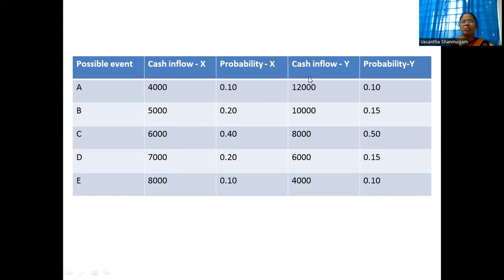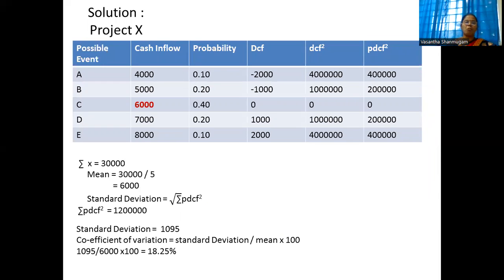For Project Y, cash inflows are: 12,000 with 10% probability; 10,000 with 15% probability; 8,000 with 50% probability; 6,000 with 15% probability; 4,000 with 10% probability. Now we work out which project is less risky using the same formula. Calculate the cash inflow, multiply by probability, then calculate deviation from the mean — here the mean is 6,000. So deviations are: 4,000 − 6,000 = −2,000; 6,000 − 6,000 = 0; 7,000 − 6,000 = 1,000; 8,000 − 6,000 = 2,000.